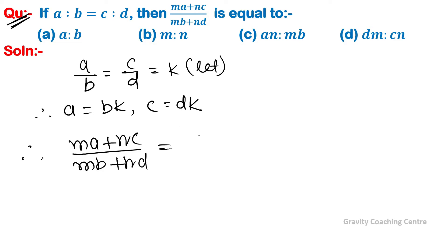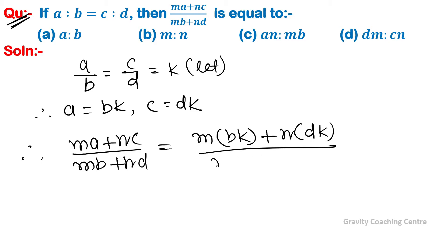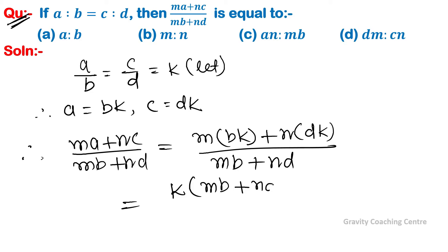Substituting: m(bk) + n(dk) upon mb + nd. Taking k as common from the numerator gives k(mb + nd) upon (mb + nd). The (mb + nd) cancels, leaving k.